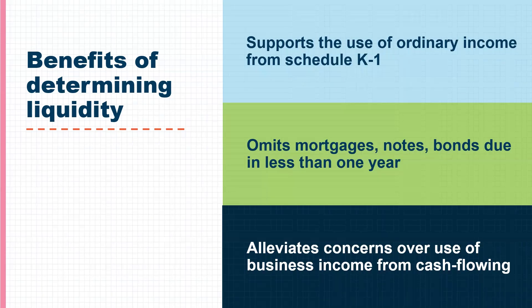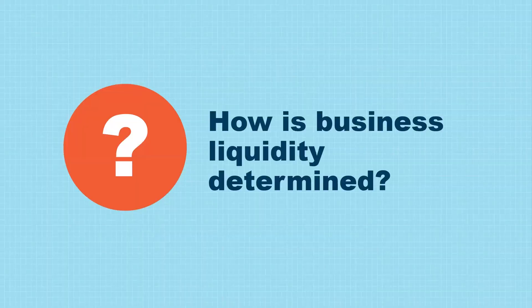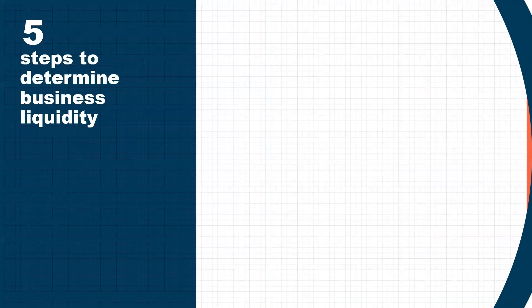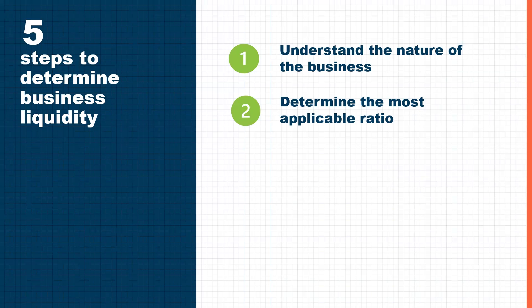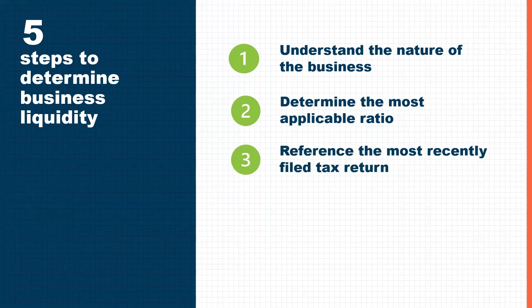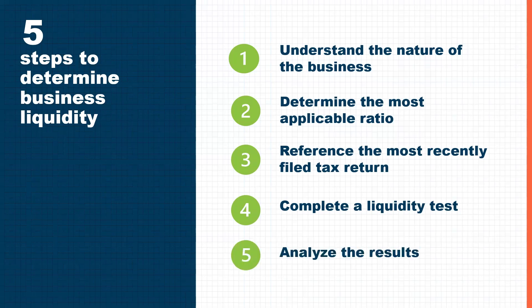Now that we know what liquidity is, how it's measured, and when considering liquidity benefits us, I'm going to outline five steps to determine business liquidity. Step one: understand the nature of the business and what is involved in its operation. Step two: based on that understanding, determine the most applicable ratio. Step three: reference the most recently filed business tax return, Schedule L. Step four: complete a liquidity test. Step five: analyze the results to determine if the business passed the liquidity test.